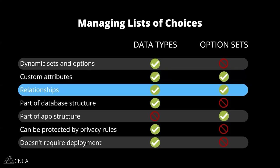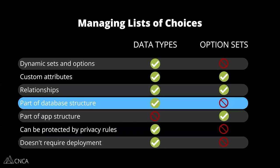Relationships is also something that you can do with both data types and option sets, but there are key differences in how you should approach designing relationships between these things. The next thing we're going to look at is how data types and option sets are incorporated into your overall app architecture.